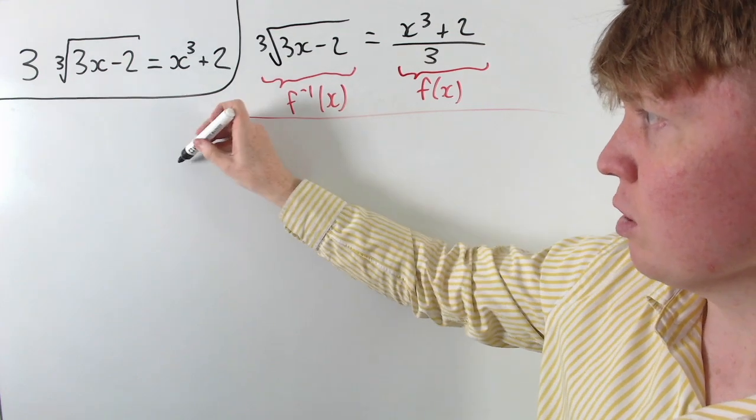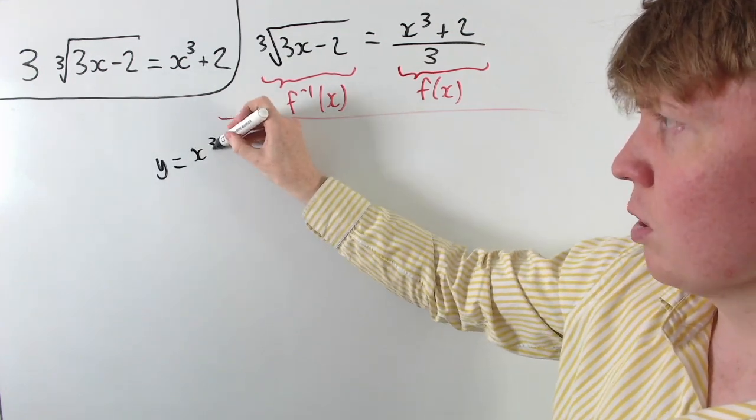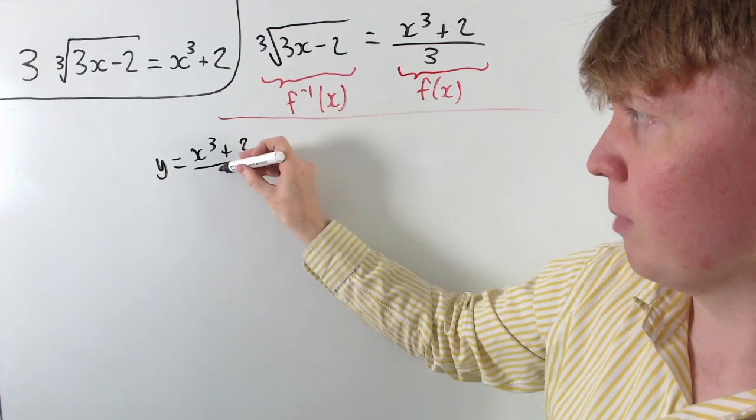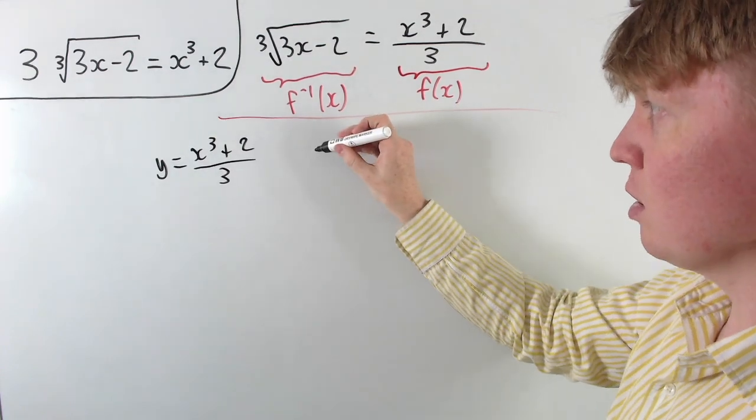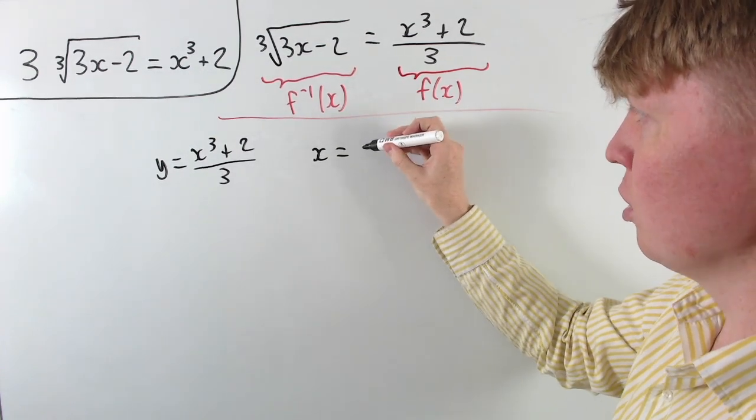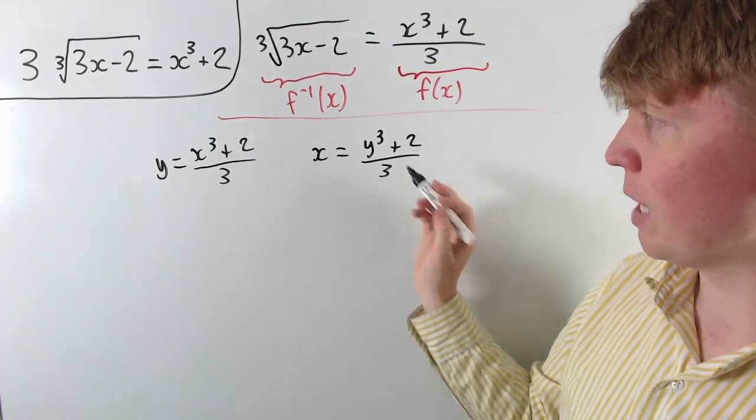So the way to check this is you could first of all write your original function as y equals x cubed plus 2 all divided by 3, and then we swap the role of x and y to invert this, so then we would write x equals y cubed plus 2 over 3, and then we just need to make y the subject.